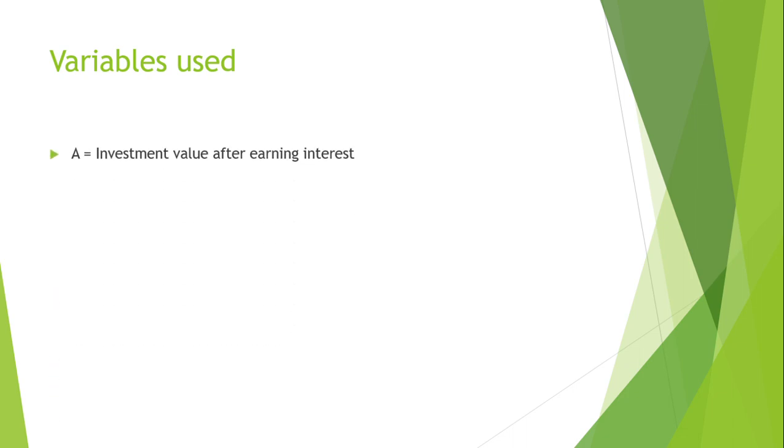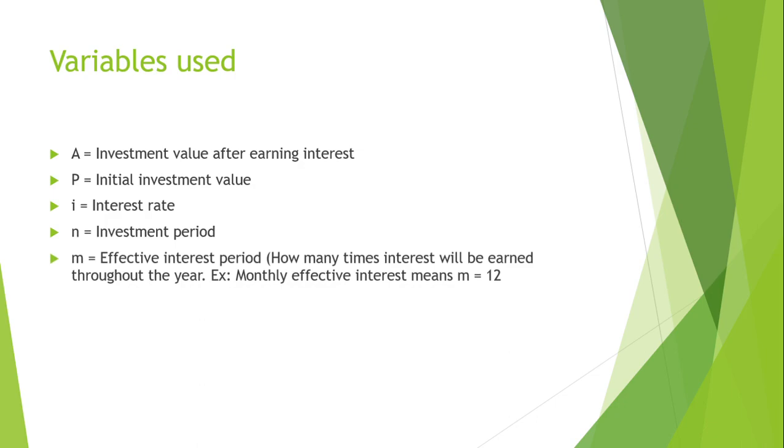So, the variables that will be used today: A, which would be the investment value after earning interest; P, which is the initial investment value; I, which would be the interest rate; N, which is the investment period; M, which is the effective interest period. This is basically how many times the interest will be earned throughout the year. So, for example, a monthly effective interest rate means M equals 12.